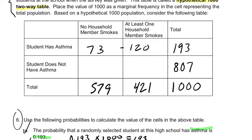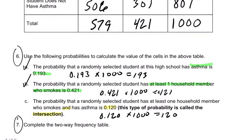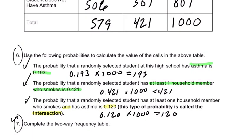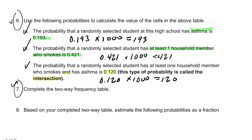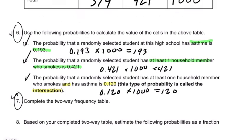Now we can fill in the missing pieces. 73 plus 120 has to equal 193. Going down the column, 73 plus 506 is 579 — that works out. And then this cell is 301. So now we've filled out our table based on these probabilities. Questions 6 and 7 are done, and there's another question 8 which I'll start in the next video.